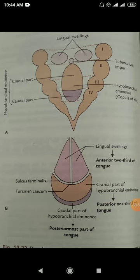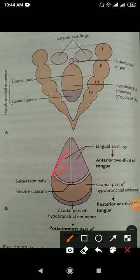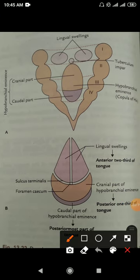Now we will learn some congenital anomalies. First, aglossia means absence of the tongue. Second, hemiglossia means half of the tongue is not developed. Third, lingual thyroid: if the median thyroid rudiment fails to descend and persists within the substance of the tongue, this is called lingual thyroid — meaning the thyroid gland remains in the tongue.